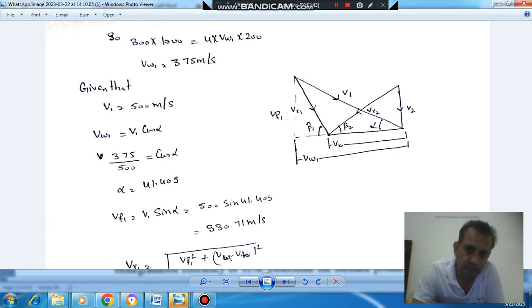This vertical component and whirl velocity. This is the absolute velocity at entry and this is absolute velocity at exit. And this is the actual velocity at exit and this is blade velocity. So this is compound velocity diagram.